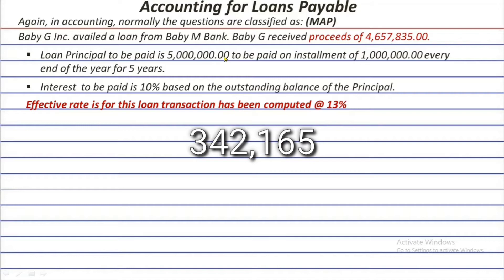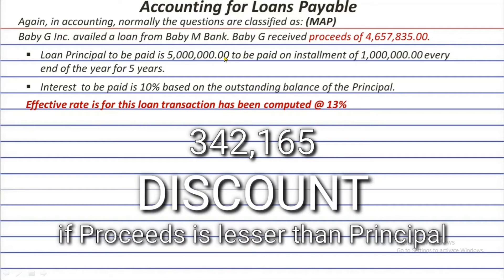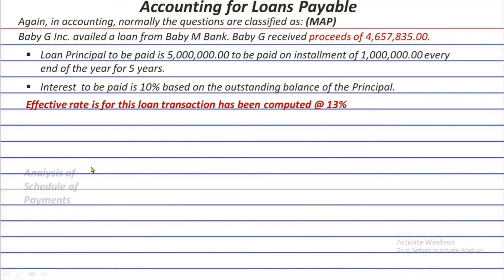This difference, where the proceeds are lower than the principal, is what we call a discount — remember that. This loan transaction is made at a discount of 342,165. That's the first point in our deeper analysis.